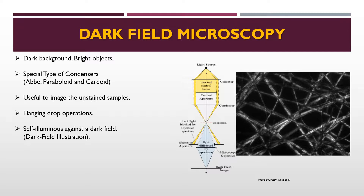In dark field microscopy, the microscope field is dark — a dark background is produced against which objects are brilliantly illuminated, like the opposite of bright field. It is used to enhance contrast in unstained samples; for example, fibers appear bright against a dark background. A special condenser transmits a hollow cone of light from the illumination source, making the object appear self-luminous against the dark field. There are three types of condensers used: Abbe condenser, paraboloid condenser, and cardioid condenser. This microscopy is particularly valuable for unstained samples and hanging drop preparations.